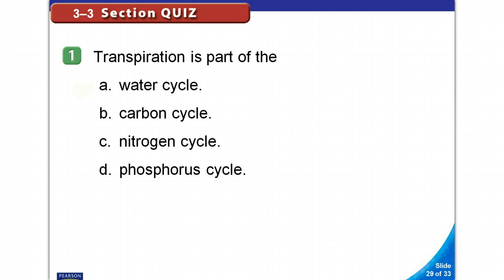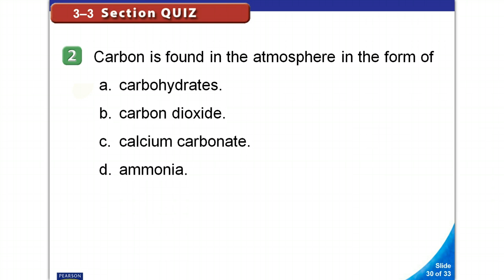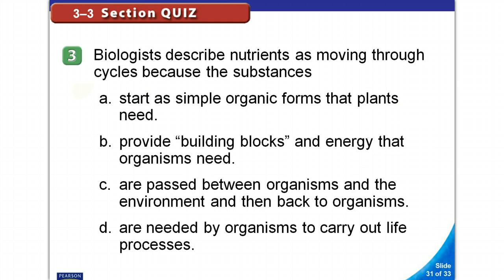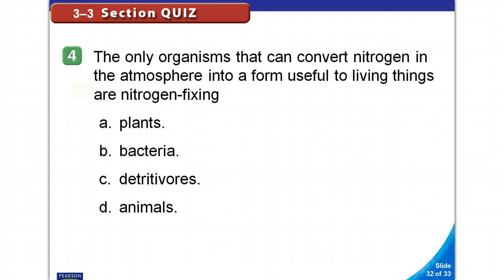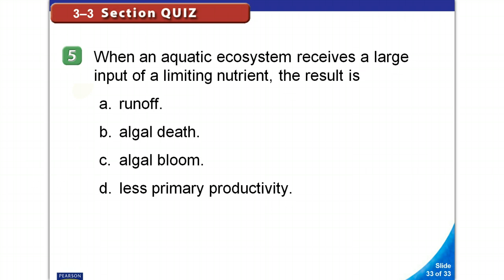Section quiz. Transpiration is part of the water cycle. Carbon is found in the atmosphere in the form of carbon dioxide. Biologists describe nutrients as moving through cycles because the substances are passed between organisms and the environment and then back to organisms. The only organisms that can convert nitrogen in the atmosphere into a form useful to living things are nitrogen-fixing bacteria. When an aquatic ecosystem receives a large input of a limiting nutrient, the result is algal bloom.